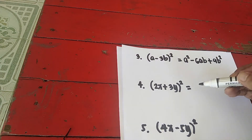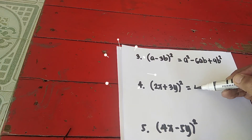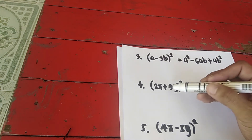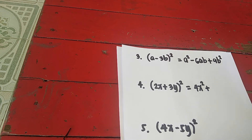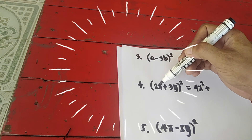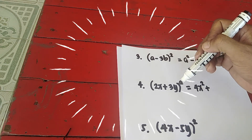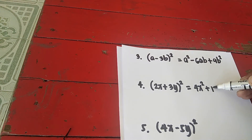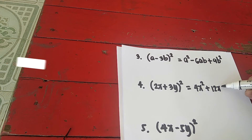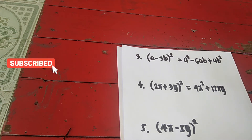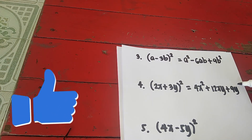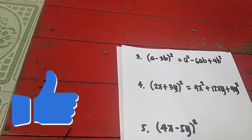Fourth example: (2x + 3y) squared. Square the first term — 2x times 2x is 4x squared. This is plus, so the middle term is plus. Multiply 2x times 3y to get 6xy, times 2, so that is 12xy. Square the last term — 3y squared is 9y squared.